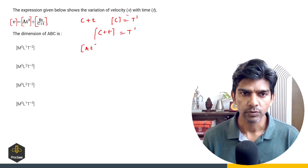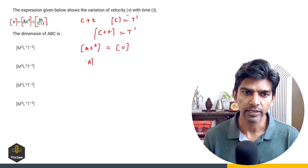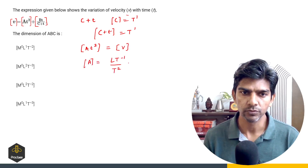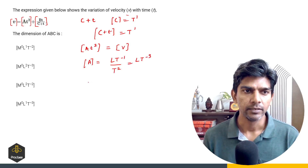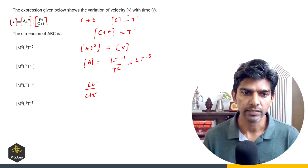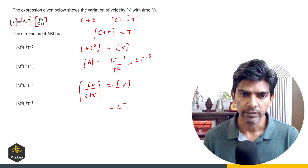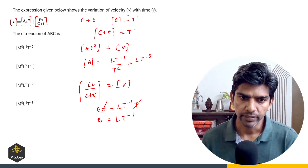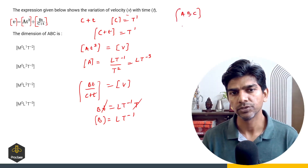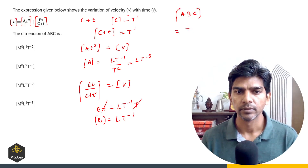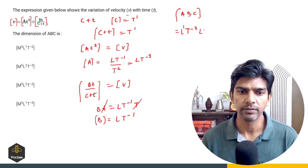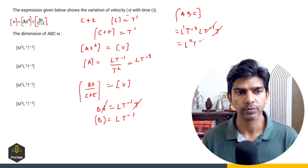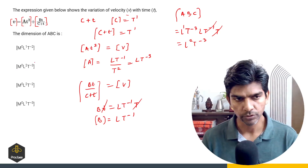Dimension of A·T squared equals dimension of v, so dimension of A equals L·T raised to power minus 1 divided by T raised to power 2, giving L·T raised to power minus 3. Similarly, B·T upon (C plus T) has dimension of v, so dimension of B equals L·T raised to power minus 1. Now the product A·B·C: A is L·T raised to power minus 3, B is L·T raised to power minus 1, C is T raised to power 1. The T terms partially cancel, giving L raised to power 2, T raised to power minus 3. Option 2 is the right answer.